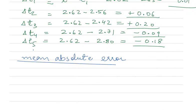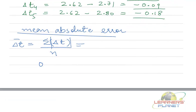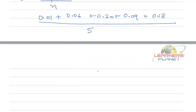The formula is delta t bar will be equal to summation of individual errors divided by number of observations. But remember that we have to take magnitude of these errors. So this value will be equal to 0.01 plus 0.06 plus 0.20 plus 0.09 plus 0.18.